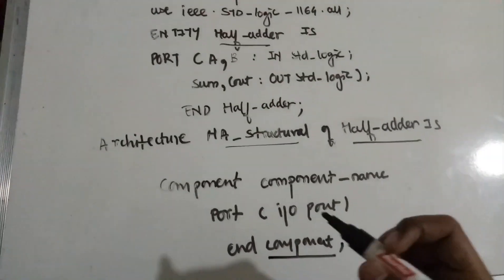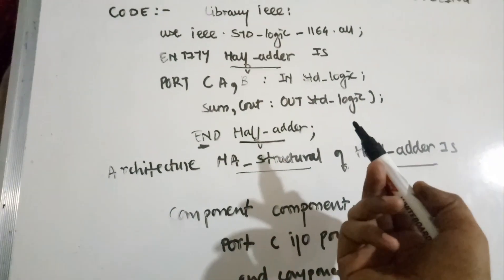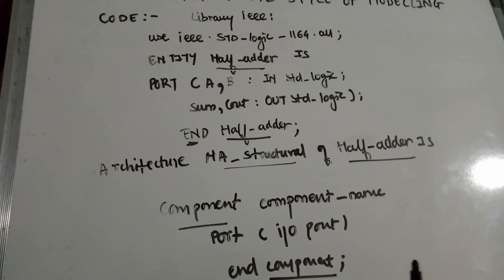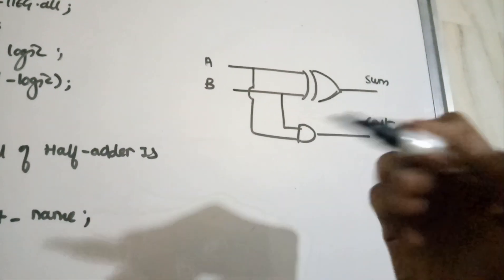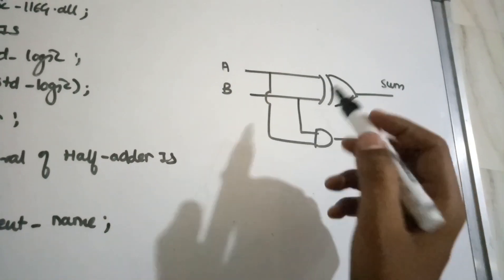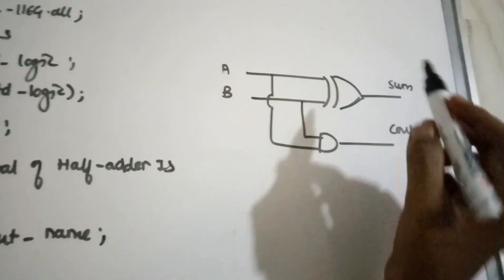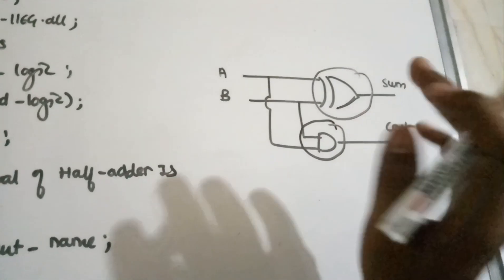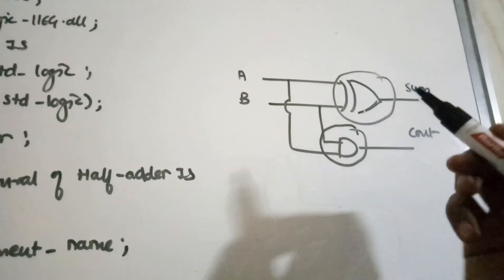The difference between a component and an entity is: your entity always ends with the entity name, whereas your component always ends with 'end component' only — no name is mentioned. In a half adder, the diagram consists of one XOR gate and one AND gate, so there are two components. We need to write component declarations for both XOR and AND.